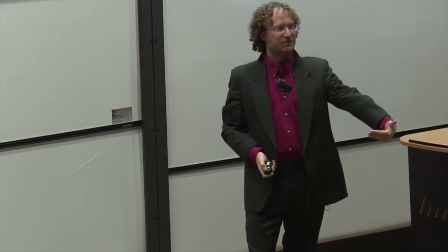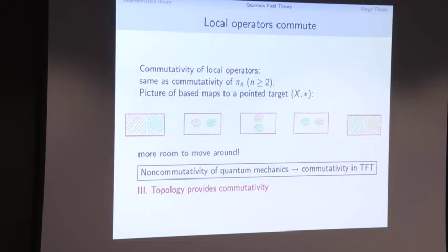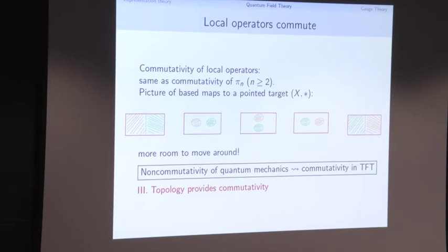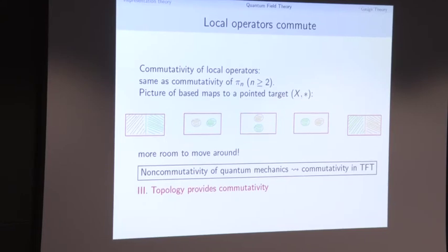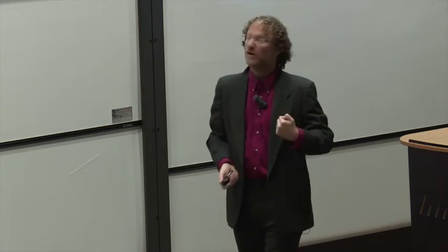In dimension one — quantum mechanics — operators are a non-commutative algebra of matrices; that's the characteristic feature. Once you go to dimensions above one in the topological world, operators form a commutative algebra. That hallmark of non-commutativity is gone. Operators have now formed a commutative algebra, and commutativity has come from topology, from the fact that we have room to move around.